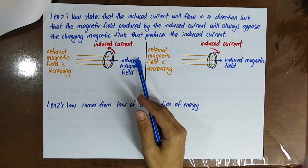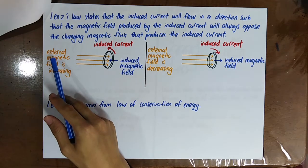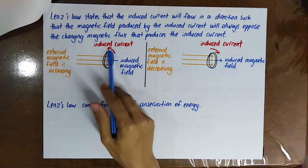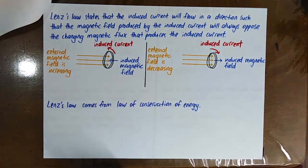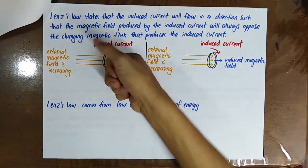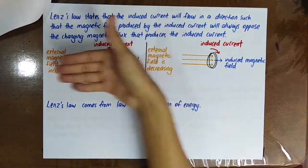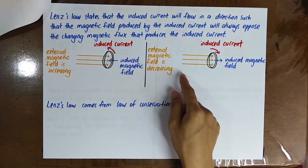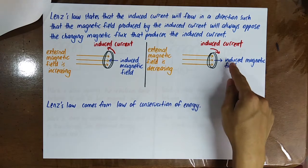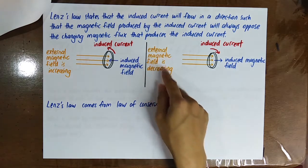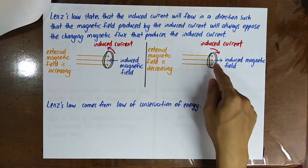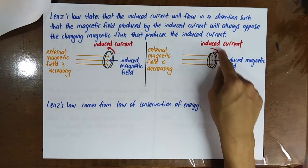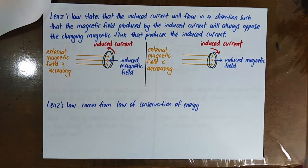For example, if the external magnetic field through a coil is increasing, Lenz's law states the induced current must flow in a direction to produce a magnetic field opposing that increase. Using the right-hand grip rule, the induced current flows such that its magnetic field points opposite to the increasing external field. If the external field is decreasing, the induced magnetic field must point in the same direction to oppose the decrease, so the induced current flows in the opposite direction.